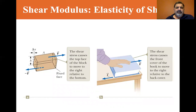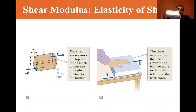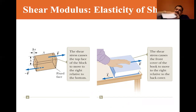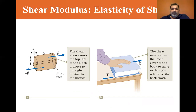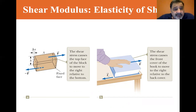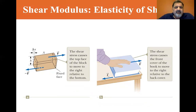For shear modulus, they use the book here. It's the deformation — this delta X increase. When I put pressure on it laterally, delta X is how much it deformed. The shear stress causes the top face of the block to move to the right relative to the bottom — or the front cover of the book to move relative to the back cover. That's the shear modulus.